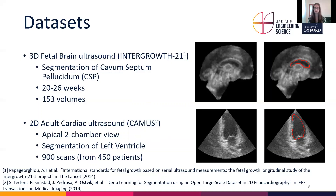The second dataset is a 2D adult cardiac ultrasound dataset, for which apical four-chamber views are available. In these scans we segment the left ventricle. We have a total of 900 scans from 450 patients, because for every patient there is an end-systolic and end-diastolic view available.